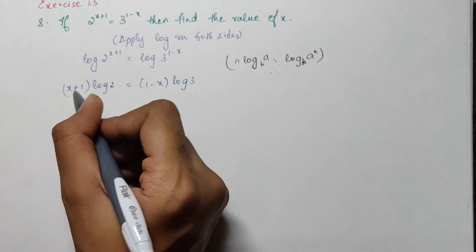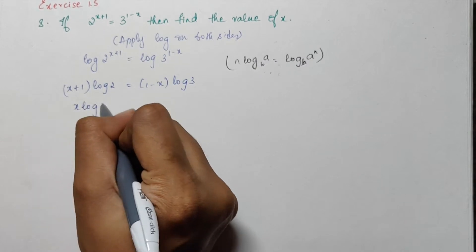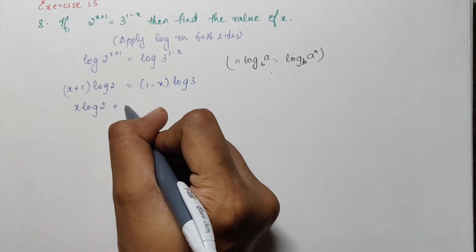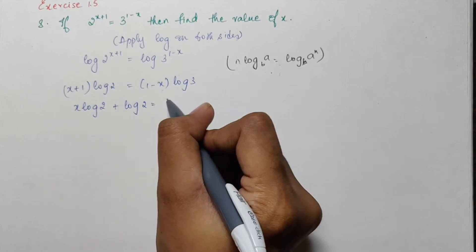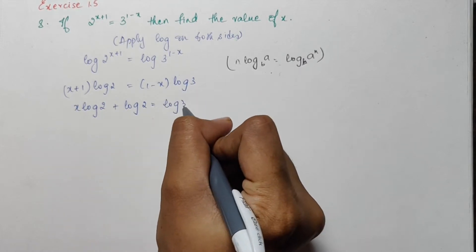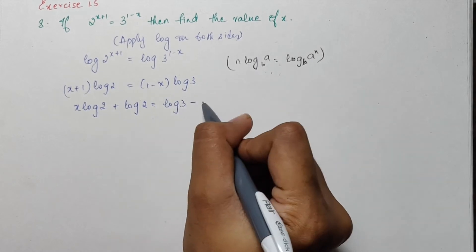Now if I open the brackets I would have x into log 2 plus 1 into log 2 is log 2, and right hand side I would have 1 into log 3 is log 3 minus x into log 3.